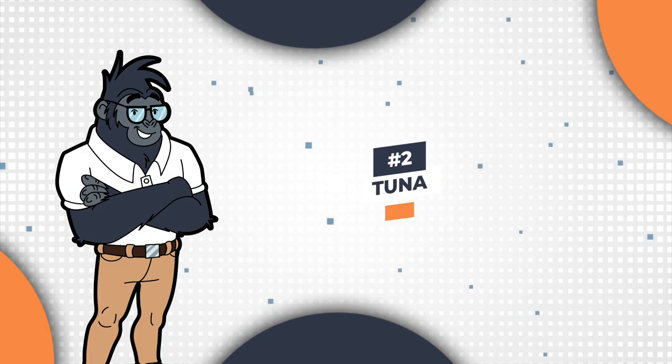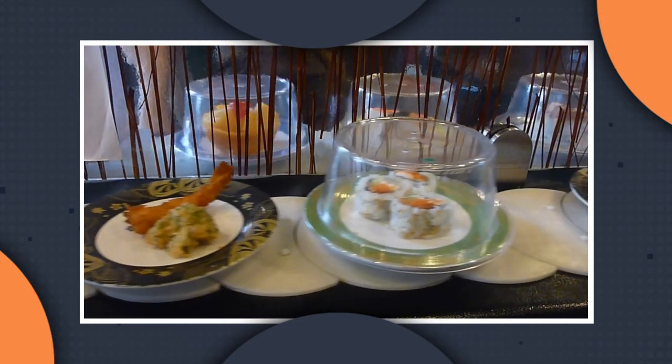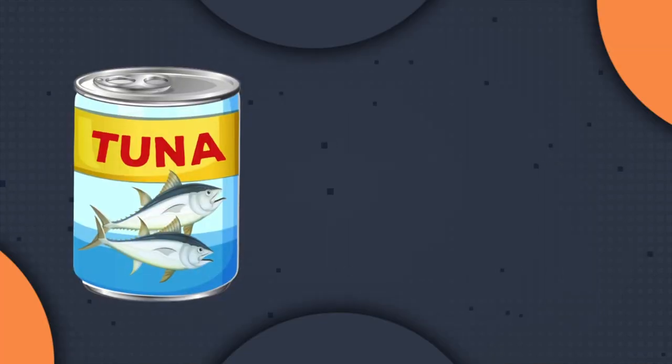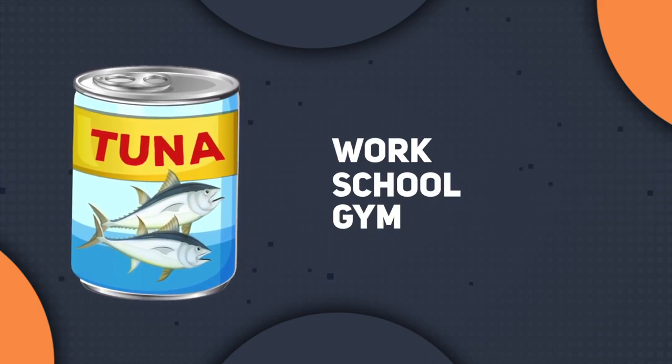Number 2. Tuna. With about 25 grams of protein in just one can, tuna is a fantastic option for fitness enthusiasts who need to fuel up on the go. And because it comes in a can, you can easily take it with you to work, school, or the gym.